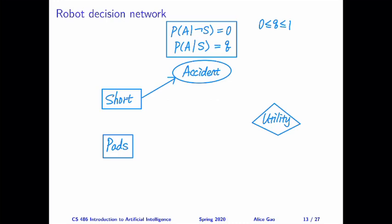To figure out the utility function, we have to answer two questions. The first one is: which variables will influence the utility of the robot, or the happiness of the robot? And the second question is: how do these variables influence the utility of the robot?